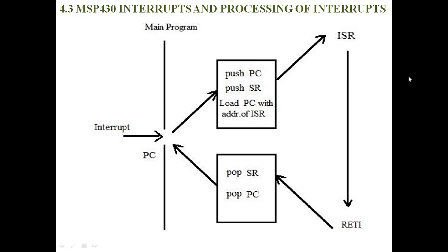After an interrupt occurs, suspend the current execution and store the next instruction address into the stack register. Next, go to the interrupt vector table, get the address of the ISR, and go to that ISR address. At the ISR address, execute all ISR instructions. After completion, execute the RETI instruction, which indicates return from interrupt. Then go to the stack register and pop the program counter which contains the next instruction address, and execute the main program as usual. That is how MSP430 executes interrupts.